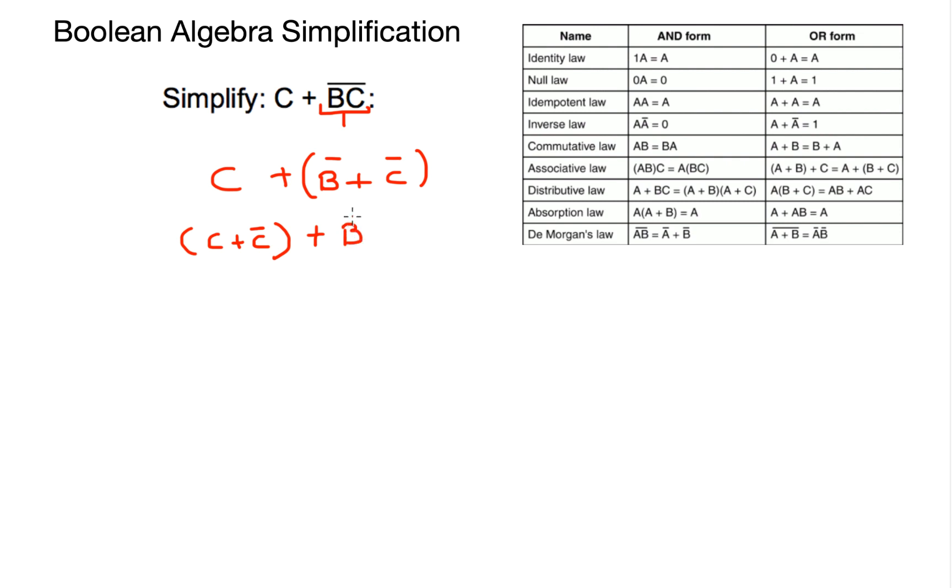By now we should be getting more comfortable with Boolean algebra and looking at C or with not C, and you should be able to look at the table or, from the top of your head, work out what that will be. And I know that C or not C will always return 1. And how do I actually know that?